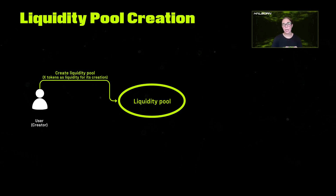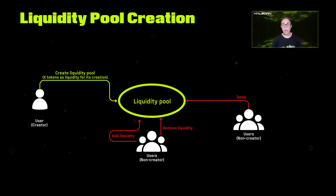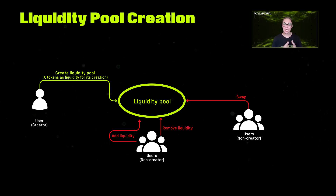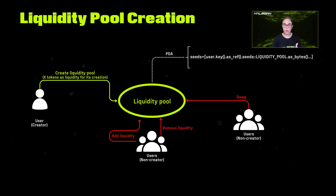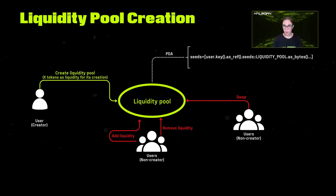In these liquidity pools, some operations can be performed like add liquidity, remove liquidity, and swapping operations. However, these operations are limited to be called only by the creator. This is because the liquidity pool account is a PDA composed of several seeds — one of them is the creator. These operations have a constraint implemented which validates that the signer matches the creator in the seed. This results in nobody beyond the creator being able to call this instruction.